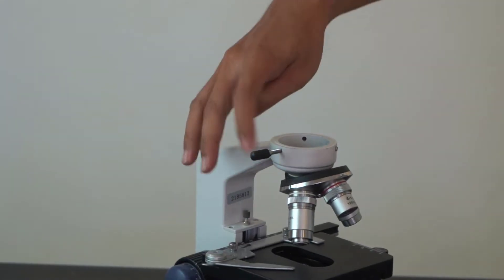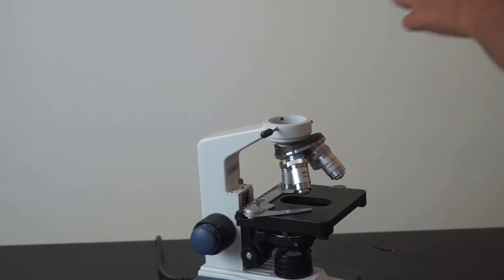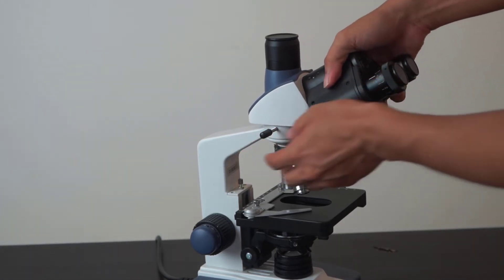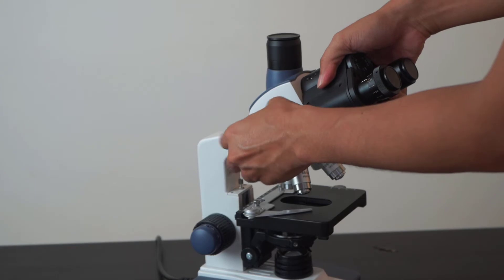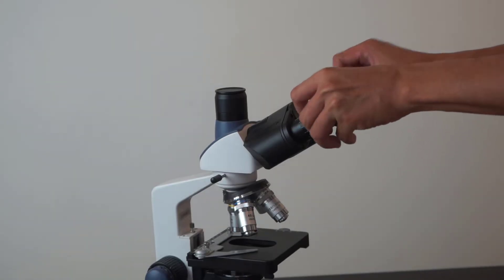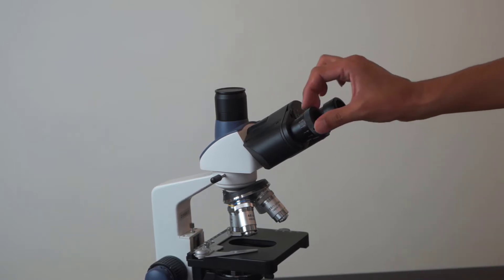On the side of the scope there is a screw which you can use to tighten the head of the binoculars. You can now insert the eyepiece into the binocular head.